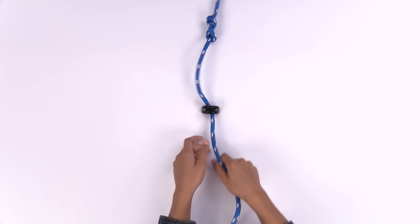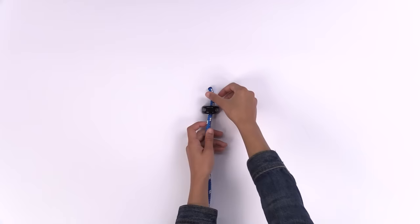Figure eight knots are also called stopper knots because they stop ropes from coming out of holes like what you see here. Before beginning, pass the rope through the hole.